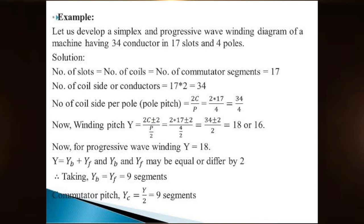Number of coil sides per pole, i.e., pole pitch = 2C/P = 2 × 17 / 4 = 8.5, approximately 8 or 9. Winding pitch Y: the formula is (2C ± 2) / P, which gives 18 or 16. For progressive wave winding, Y = 18. For retrogressive wave winding, Y = 16. Also, Y = YB + YF, and YB and YF may be equal or differ by 2.